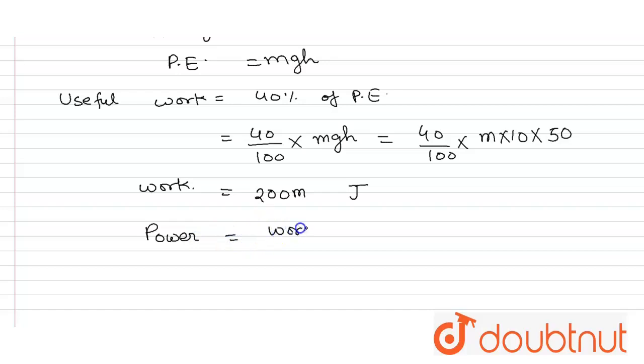Power is work done per second. So power is given: 1 megawatt will equal 200 times mass of water.